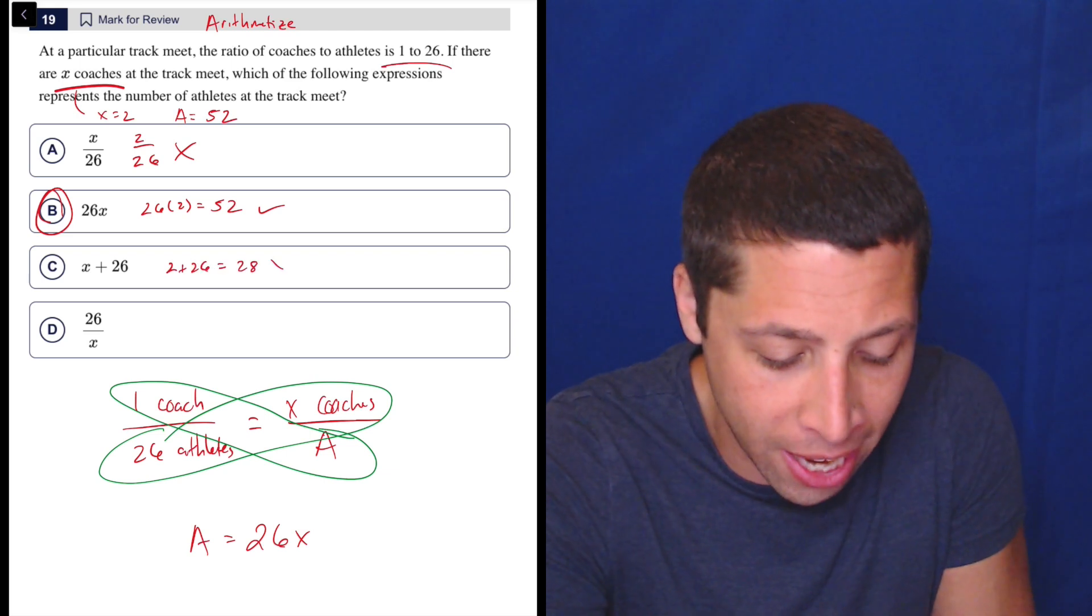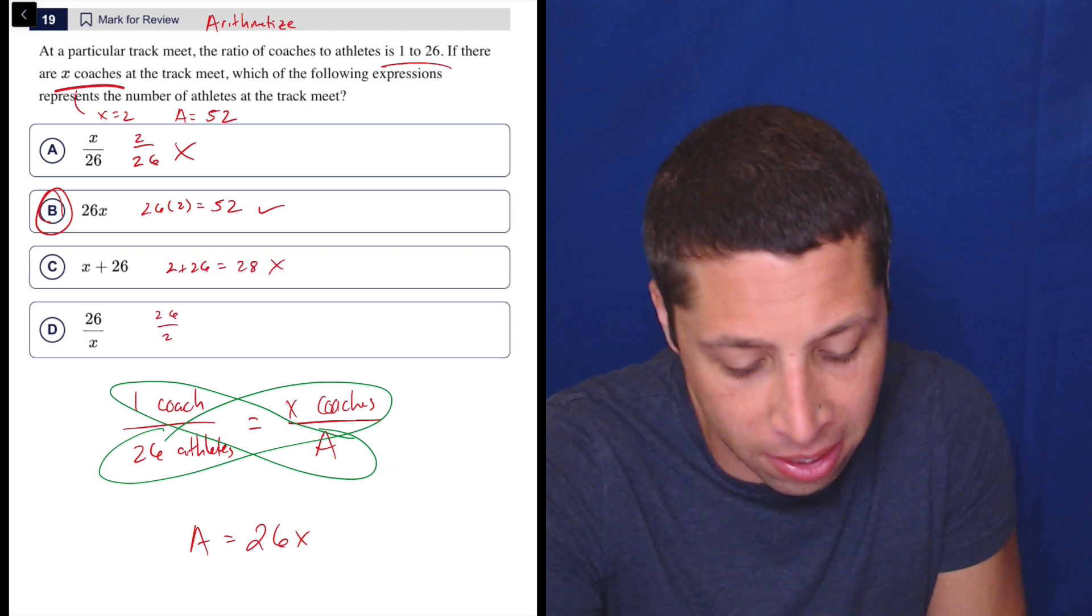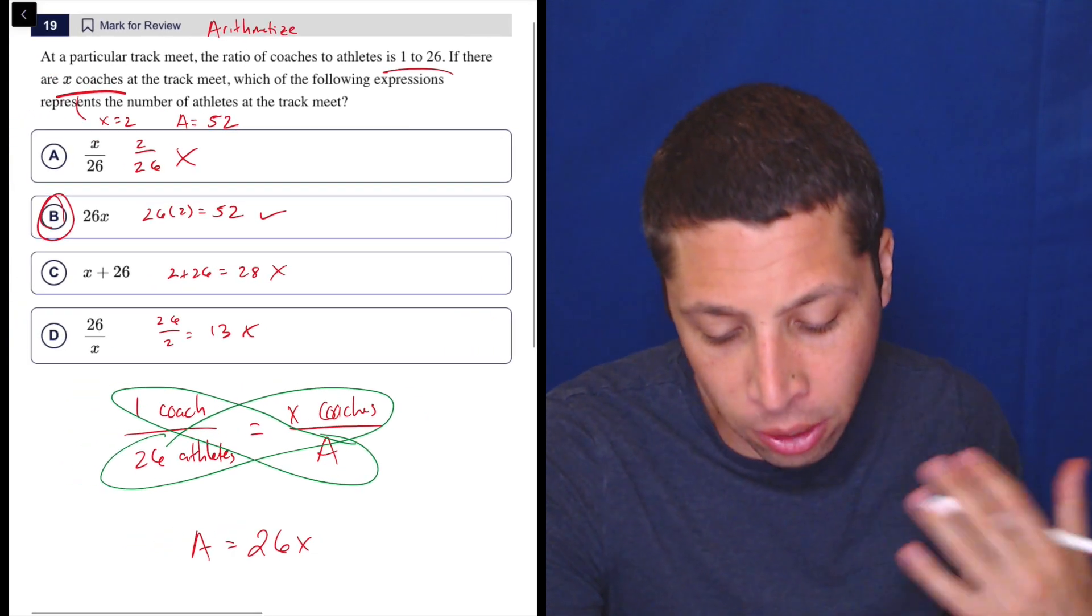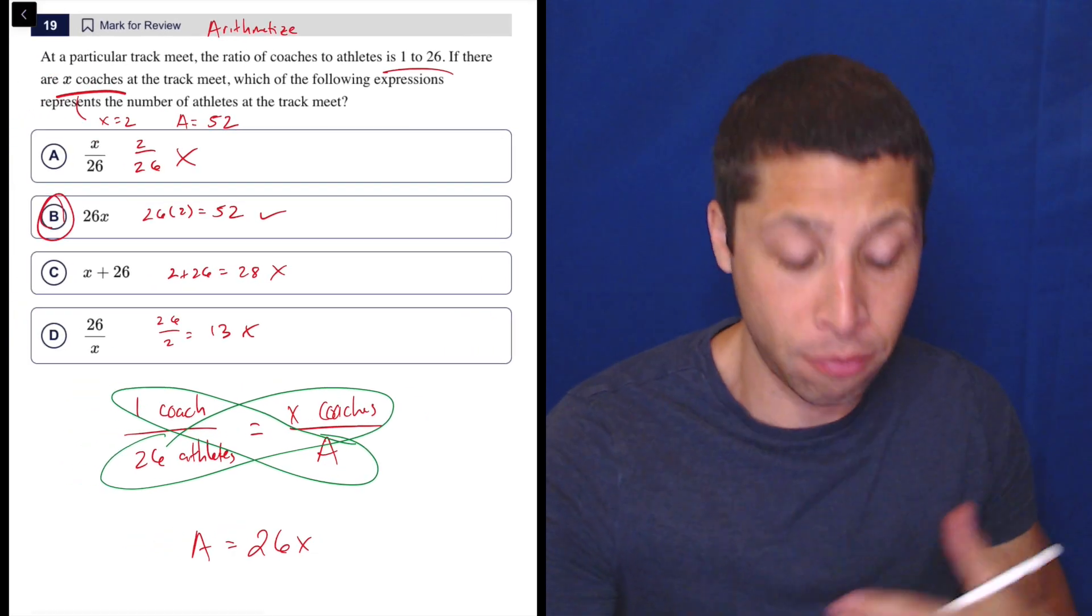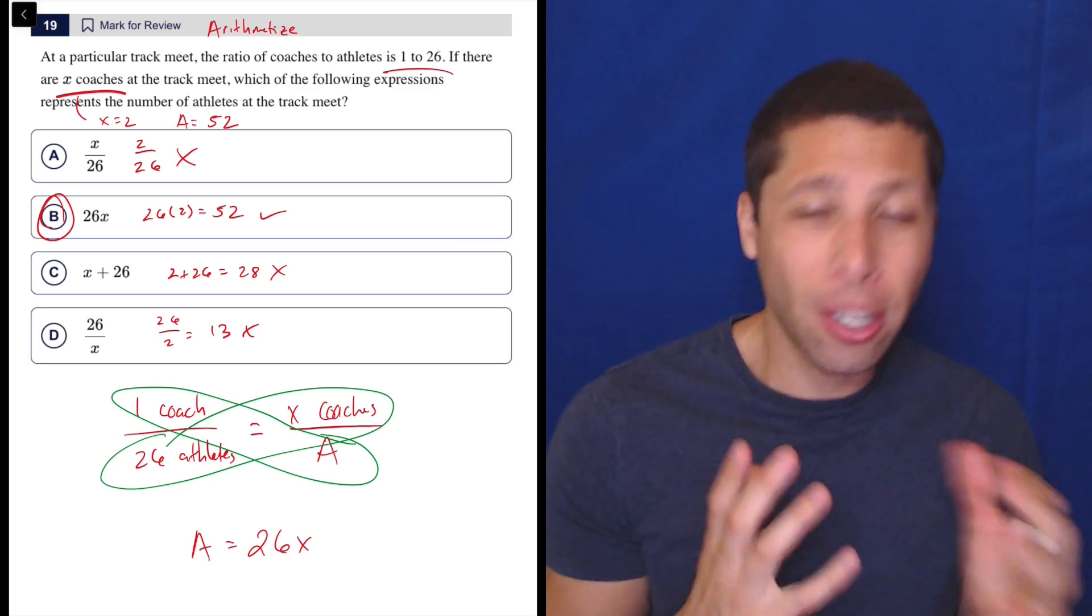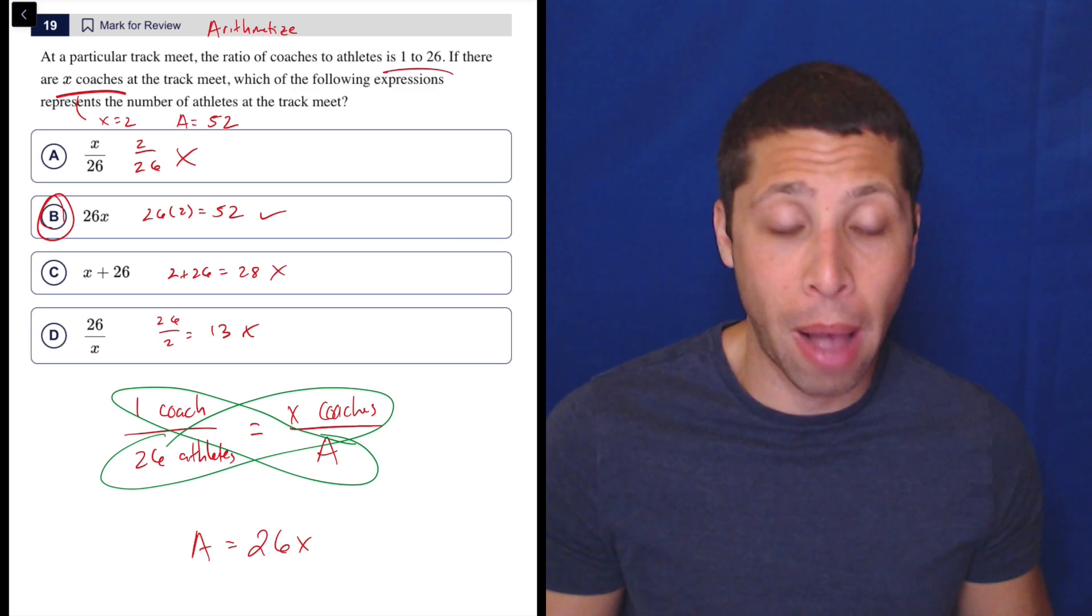Two plus 26 is 28. That doesn't work. And 26 divided by two is 13. So again, that doesn't work. Though I would say that either A or D are probably what you would get if you wrote this ratio wrong, because we still kind of like the fraction, but somehow we've put the X or the 26 in the wrong spot.